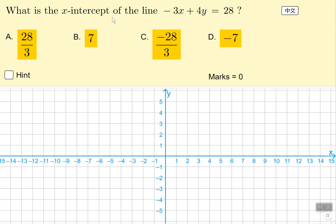We're learning about reading x-intercepts from any line, for instance -3x + 4y = 28.